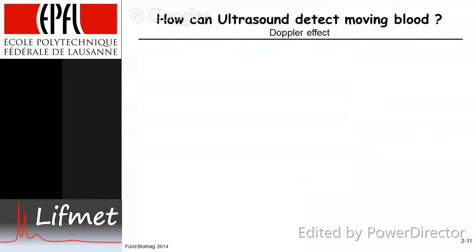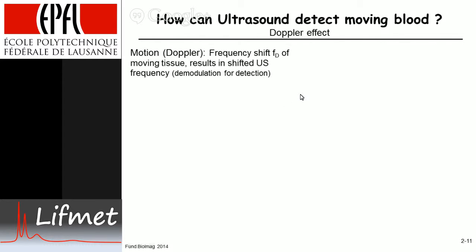The last topic is how ultrasound can detect moving blood, and that is done with the Doppler effect. The Doppler effect is a manifestation of a frequency shift of a sound wave. If an object is moving — in this case, moving tissue — this results in a shift in ultrasound frequency that can be detected with demodulation, which is essentially detecting a different sine wave.